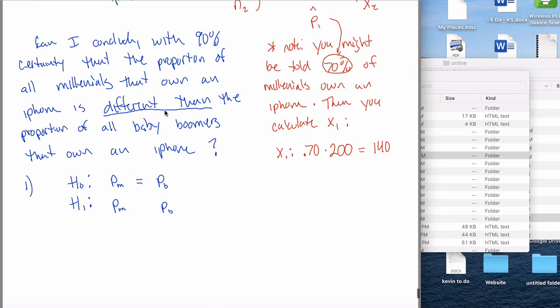For the alternative hypothesis, because it says different than, we can put a does not equal sign in here. If it said, can I conclude that millennials are more likely, or the proportion of all millennials who own an iPhone is greater than the percentage of all baby boomers who own one, then I can put a greater than sign in here. Anyways, this is a two-tail test. That's all you got to do for step one.